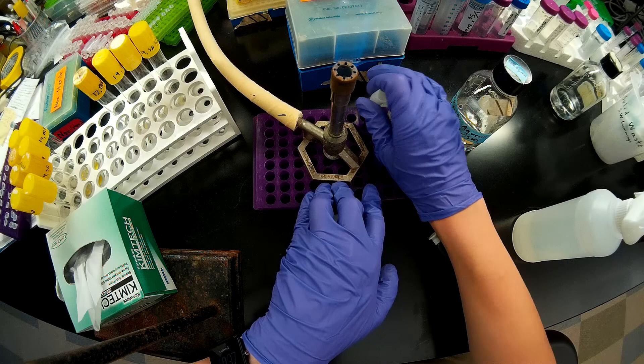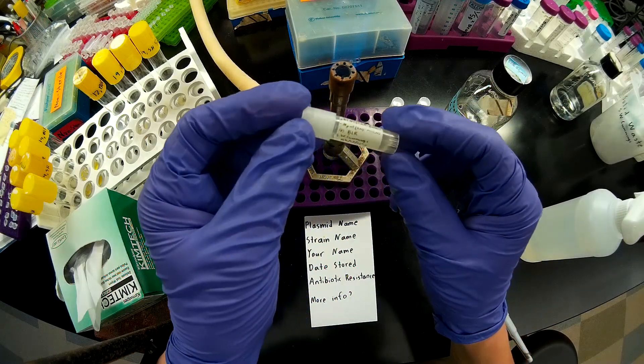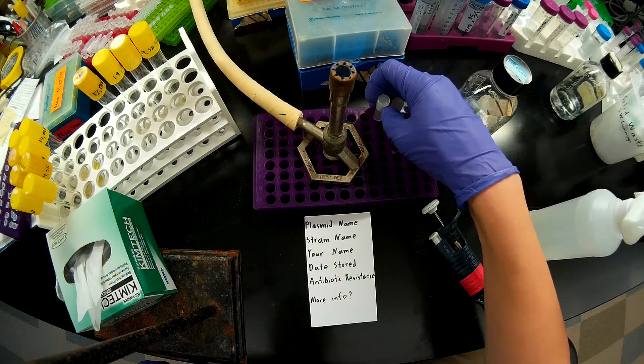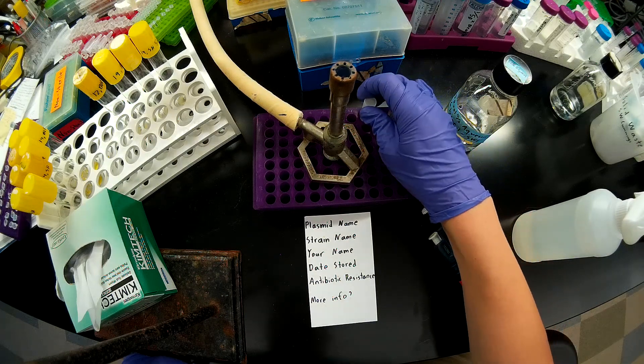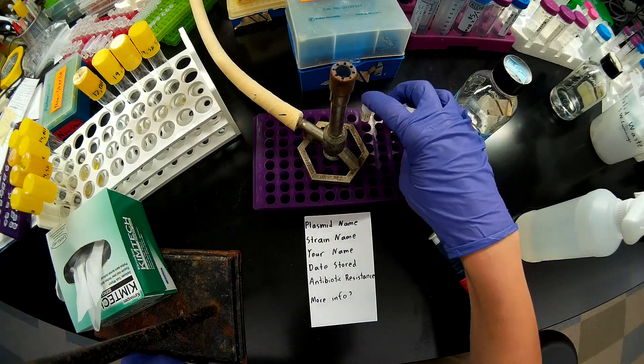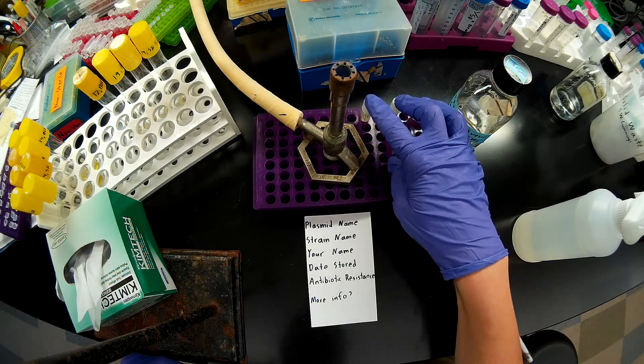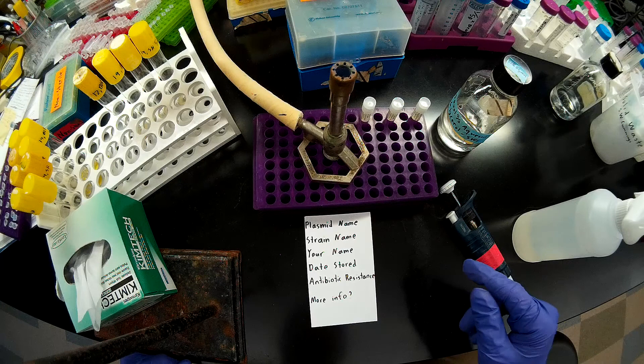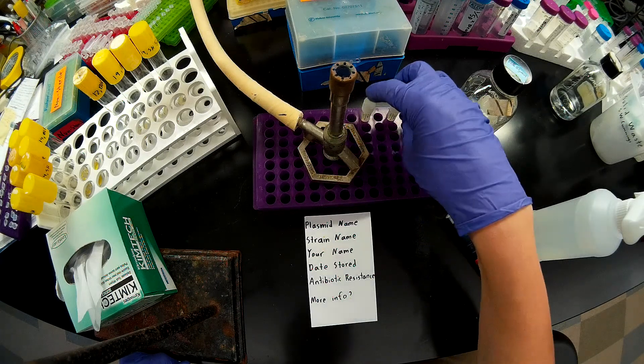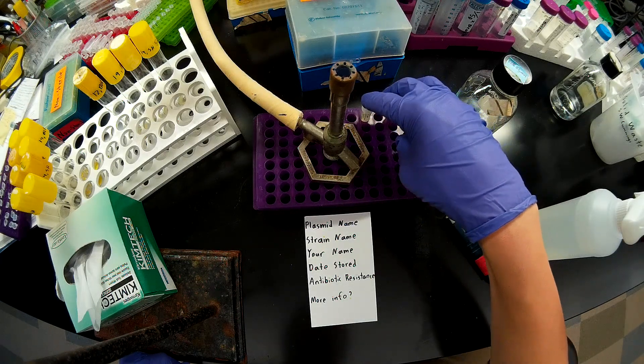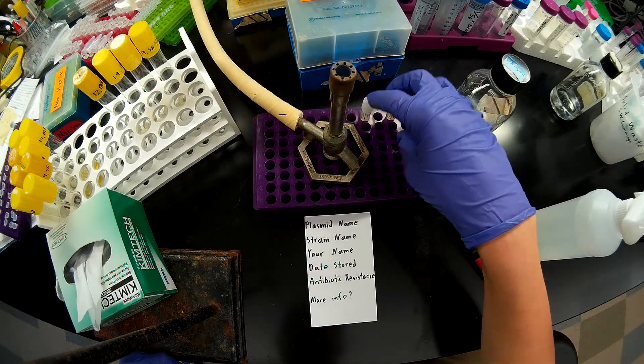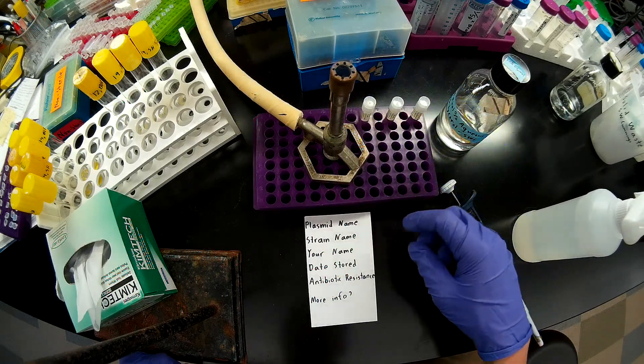Okay, now you'll note that just to save time in this video, I've already labeled these tubes. But you want to make sure that you have put very detailed labels on any tubes that you're storing in the minus 80 freezer. Because presumably if you're storing something in the minus 80 freezer, that's for long-term storage. So you want to make sure that there's enough information on those tubes for somebody to be able to identify these strains or the strain and the plasmid that's in it later on.